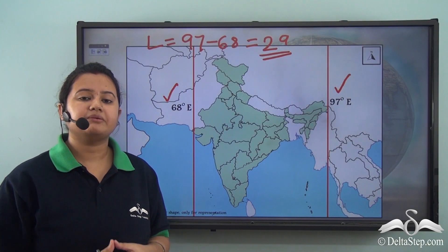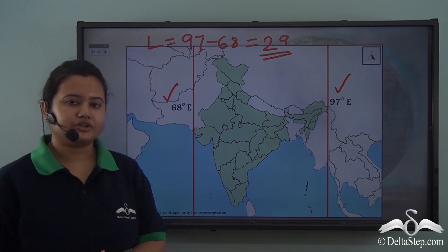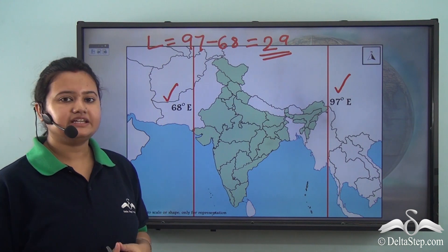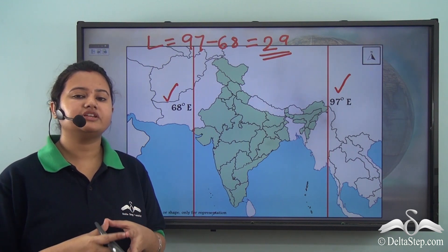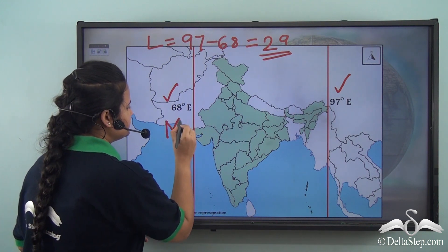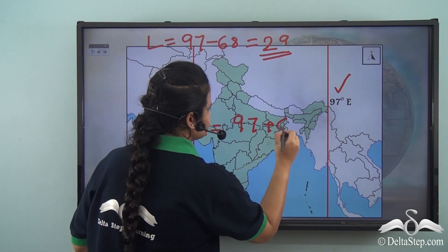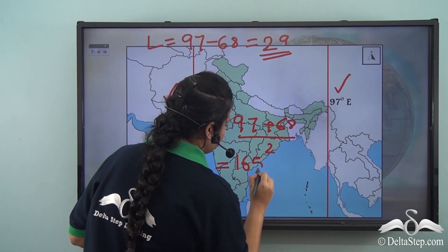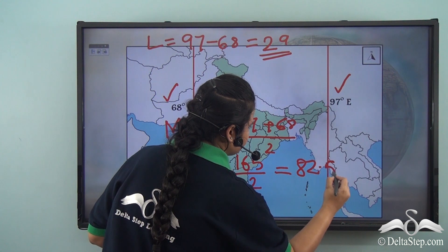This uniform time is based on the meridian or longitude that passes through the middle of the country. Since the longitudinal extent of India is from 68 degrees east to 97 degrees east, the mean meridian or central meridian will be the average of these two longitudes. That is: mean meridian = (97 + 68) / 2 = 165 / 2 = 82.5 degrees east.